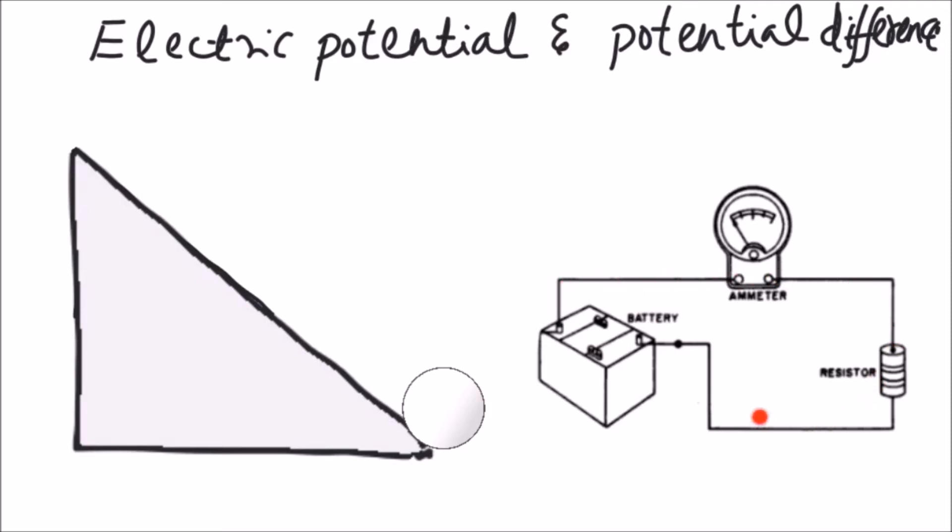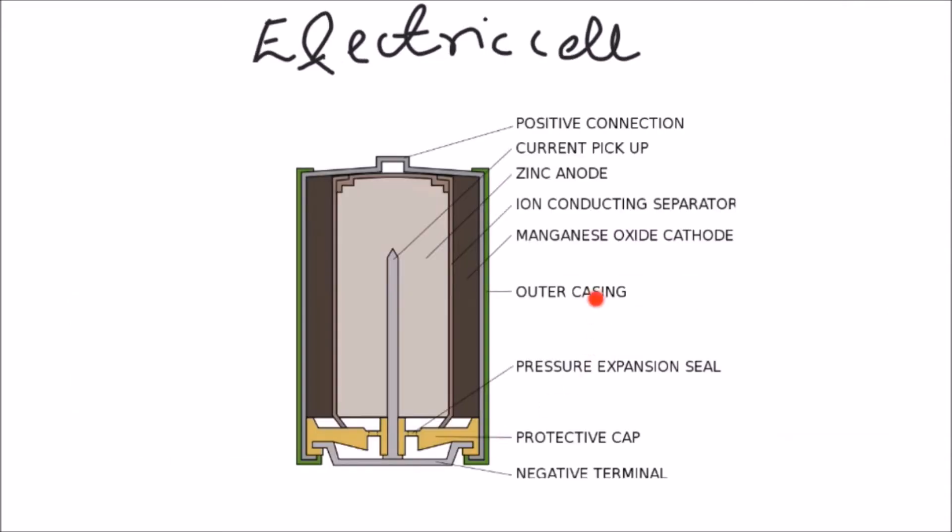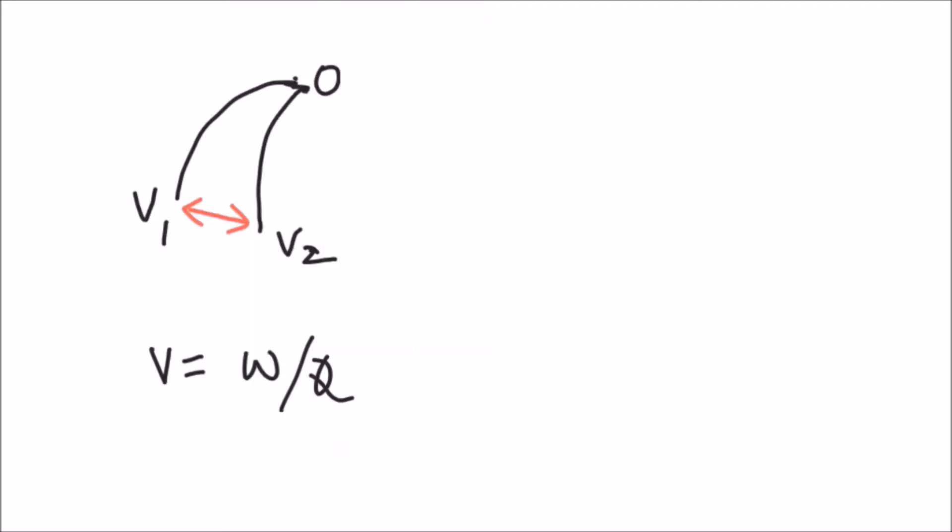The electric cell keeps losing its internal chemical energy to maintain the potential difference between the positive and negative terminals. The potential difference means some charges are at one potential and other charges are at another potential.